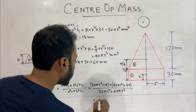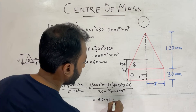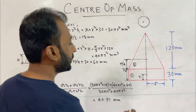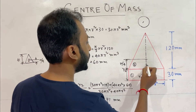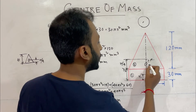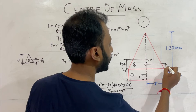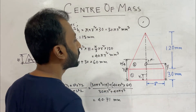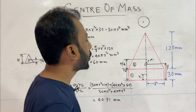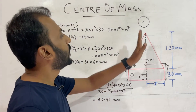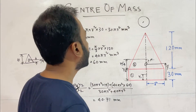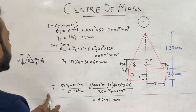Simplifying the expression by cancelling π·r²: y̅ = (30·15 + 40·60) / (30 + 40) = (450 + 2400) / 70 = 2850 / 70 ≈ 40.7 mm. This is the distance of the center of mass from the base plane of the solid body.